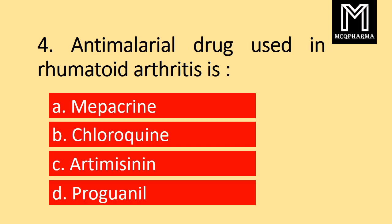Question number 4. Antimalarial drug used in rheumatoid arthritis is: Option A Mapacrine, Option B Chloroquine, C Artemisine, D Progonyl. Correct answer: Option B Chloroquine.